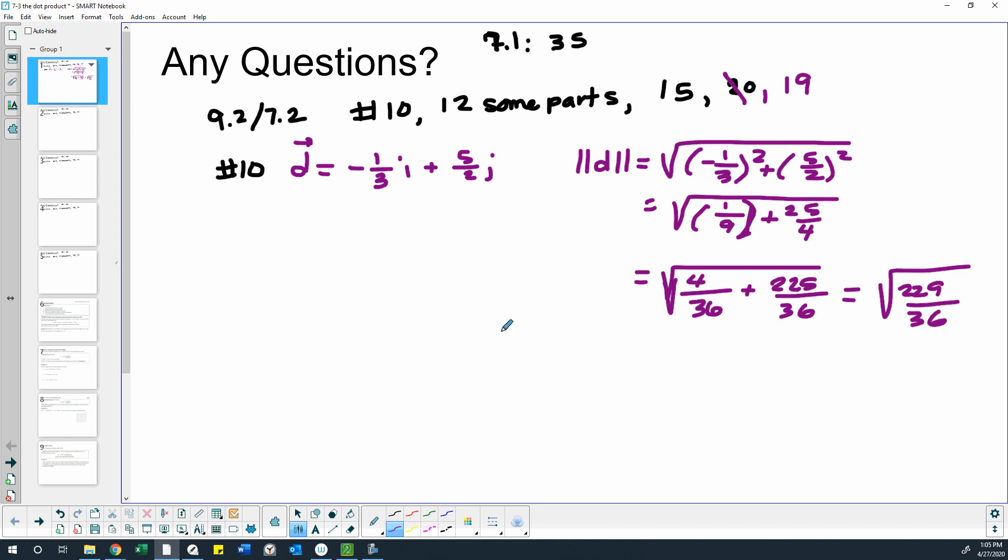And does 229 happen to have a perfect square? I doubt it does, but just to make sure. Nope! So 229 is not a perfect square, which I didn't think it was. So that leaves us with the square root of 229 over 6.